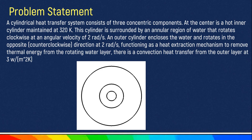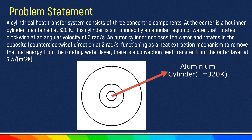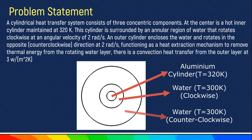There is a cylindrical heat transfer system which consists of three concentric components. At the center there is a hot inner cylinder maintained at a temperature of 320 Kelvin. This hot cylinder is surrounded by an annular region of water that rotates in a clockwise direction at an angular velocity of 2 radian per second and is at a temperature of 300 Kelvin. There is another outer cylinder around it which consists of water at 300 Kelvin, rotating in a counterclockwise direction at the same velocity of 2 radian per second.